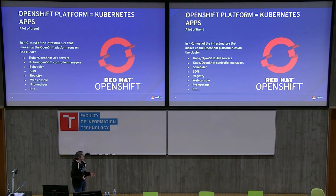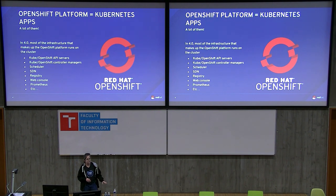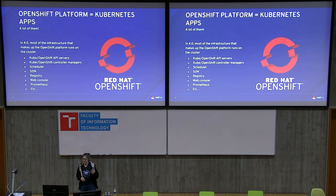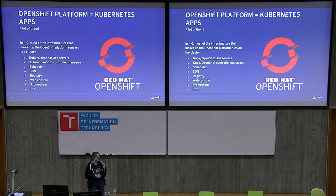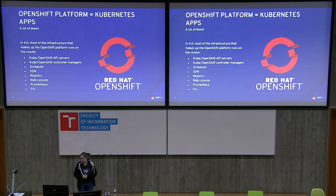The OpenShift platform, particularly in 4.0, is almost entirely Kubernetes applications as I defined them. From the very bottom — the Kubernetes and OpenShift API servers — to the controller managers, the scheduler, the SDN, the registry, the web console, Prometheus, and the list goes on. As mentioned in the intro, over 40 of them — we may be up to 50 at this point. The list keeps growing as we break the platform apart and make it self-managing.